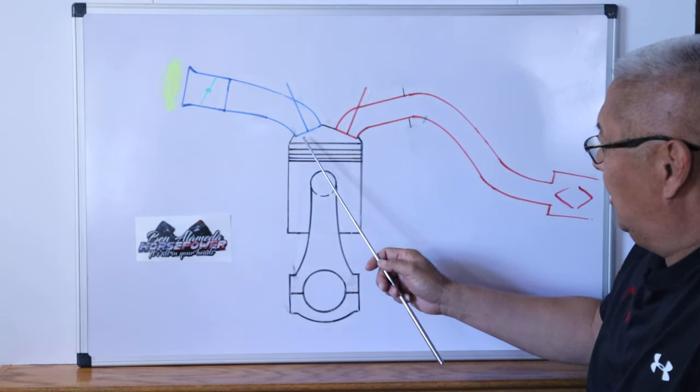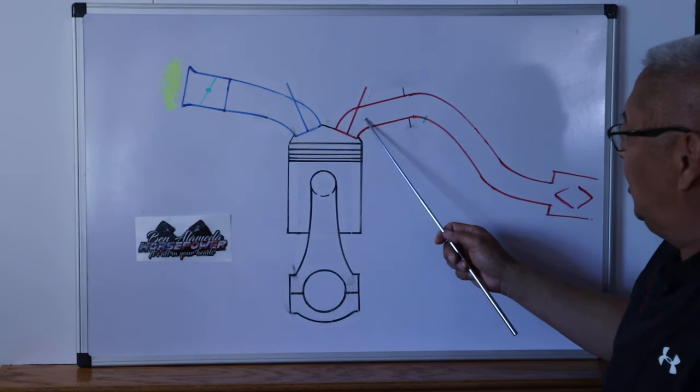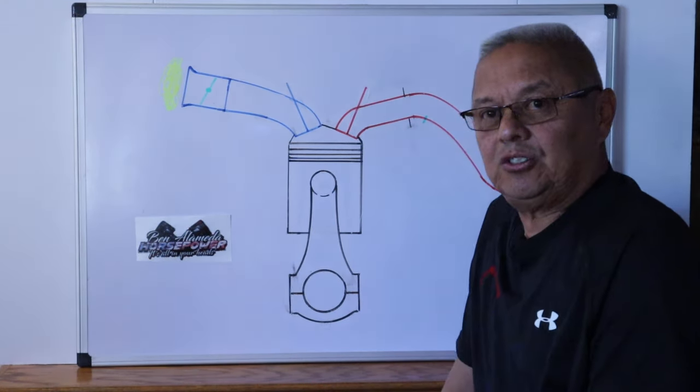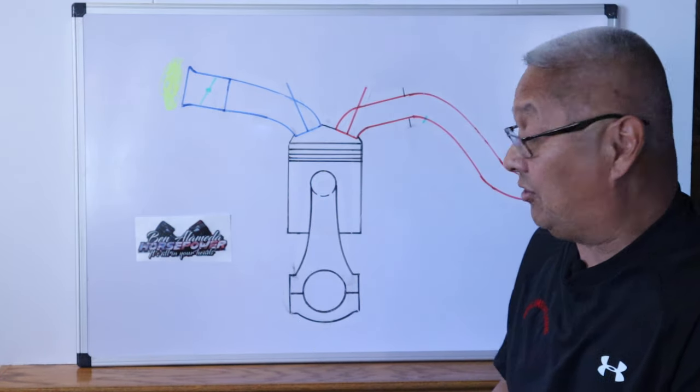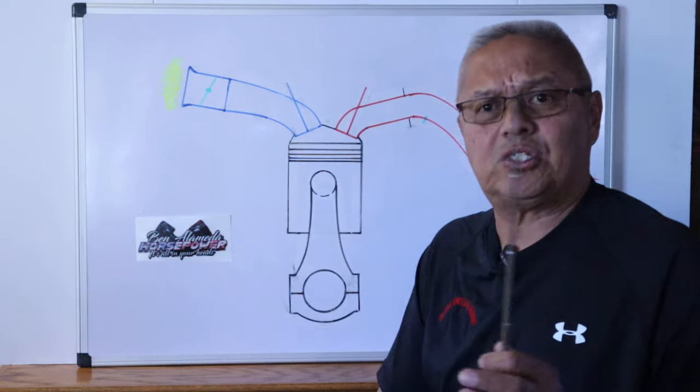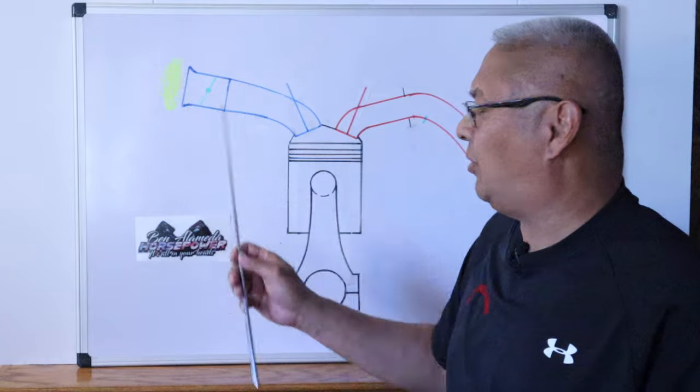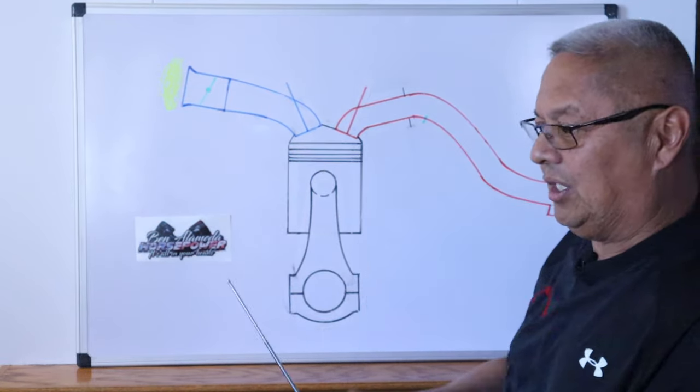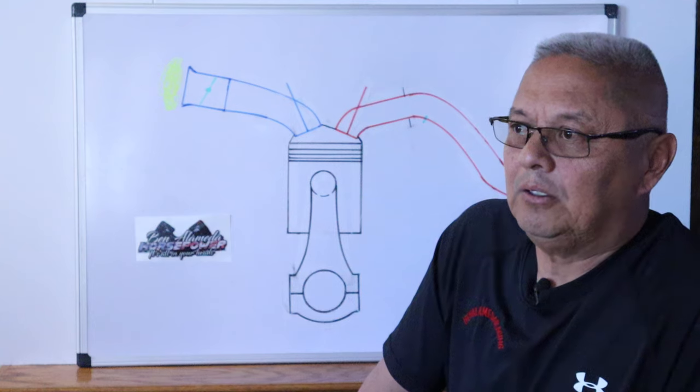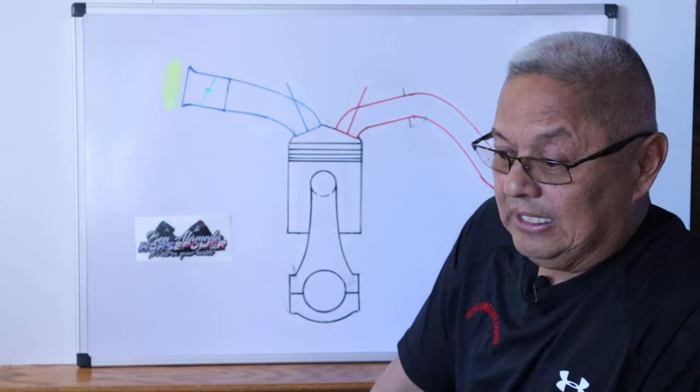Here we have an intake port, combustion chamber, piston, connecting rod, crank, and exhaust in red. I'll explain and apply this to a V8 engine or four-cylinder—the principle is the same, except one engine is running by itself like a single piston motorcycle. With multiple cylinders, you can have cylinder robbing in the intake, and in the exhaust collector, it can help or hurt depending on length.